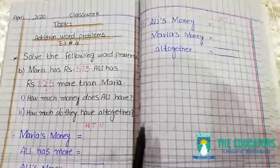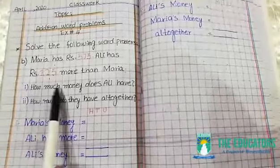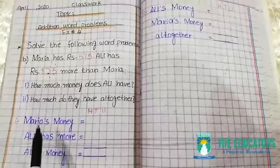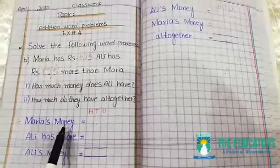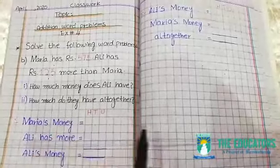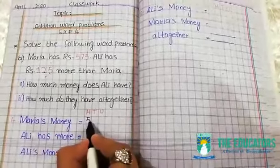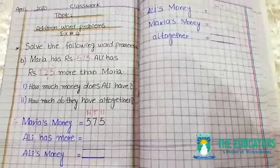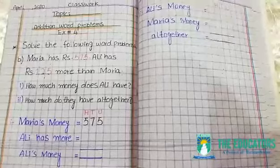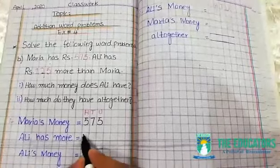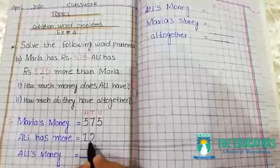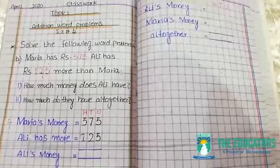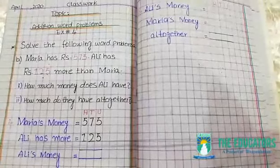Let's solve the first part: how much money does Aliyah have? Pehle hum likhte hain — Mariya ke paas kitni money hai: 575 rupees. Aur Ali ke paas kitni money zyada hai Mariya se: 125 rupees.